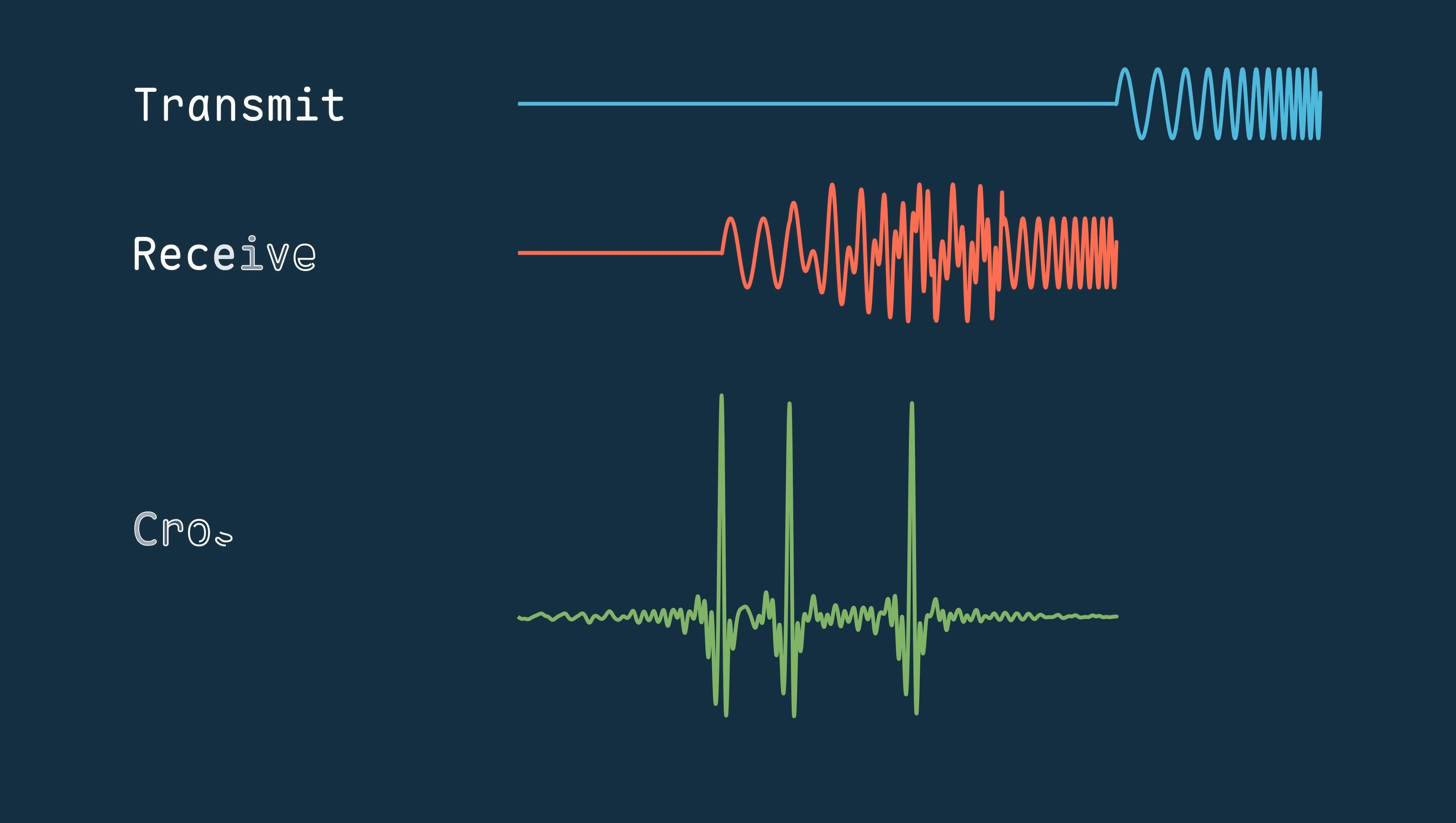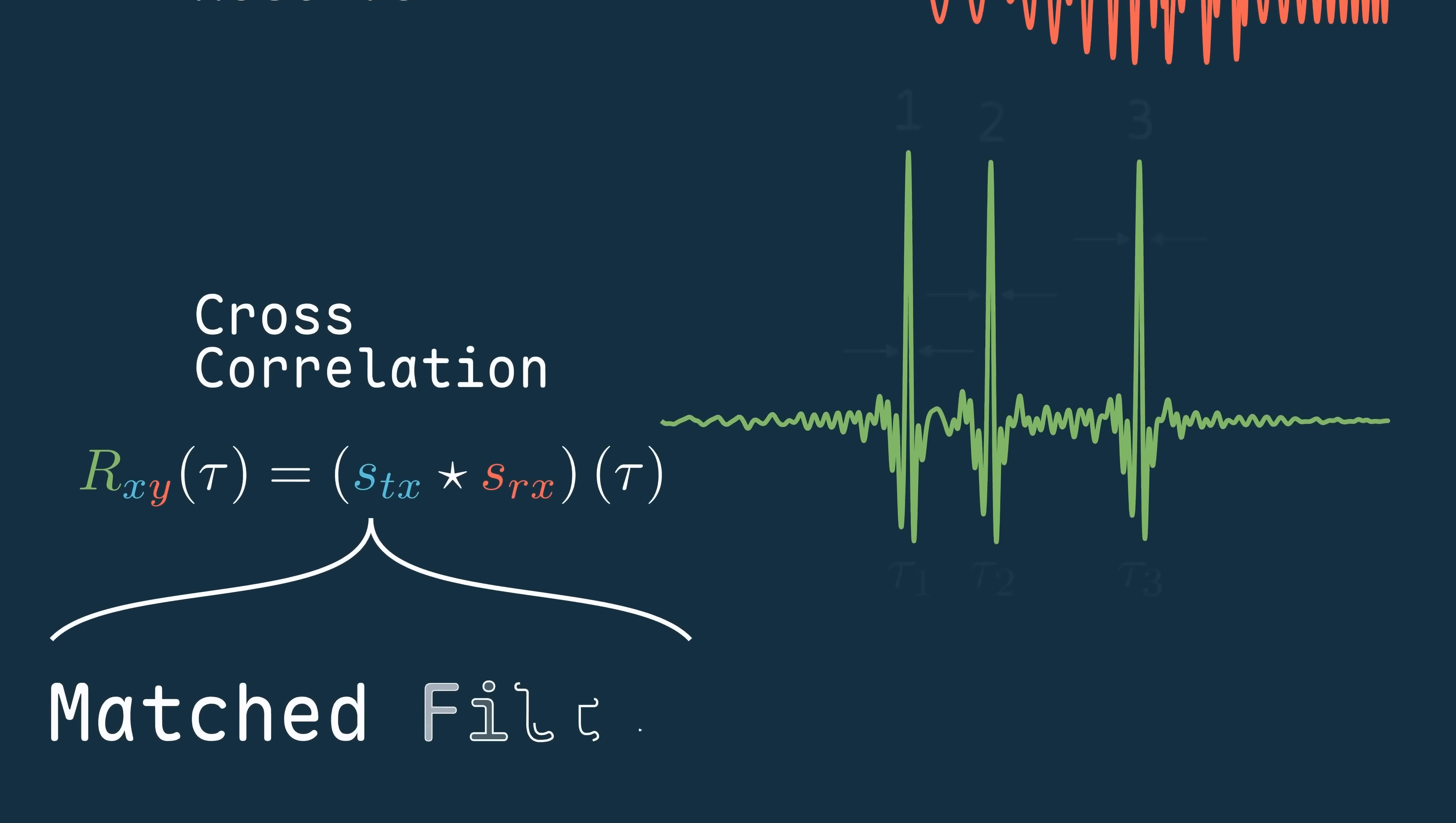This function is called the cross-correlation because it shows us what points in time these two signals are most correlated to one another, or where there's maximum overlap in their structures. In radar, this process is implemented by something called a matched filter.